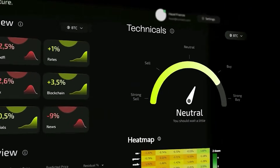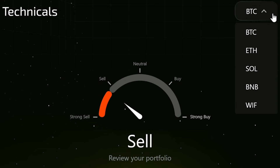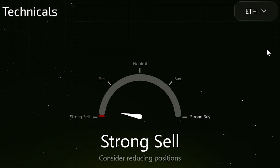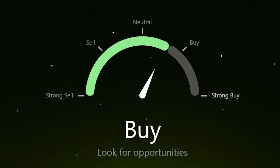Scroll down a bit and you'll come to the technical section. Here, you'll see a gauge that simplifies everything even further. Using the Oracle model's data, it gives you a straightforward sell, neutral, or buy signal so that you can get a quick sense of the model's sentiment on the selected asset without diving into detailed numbers.